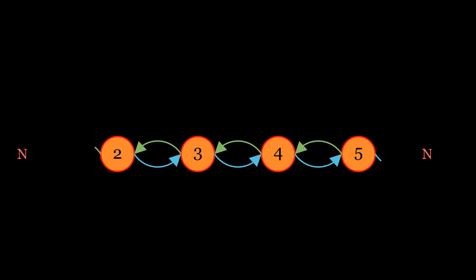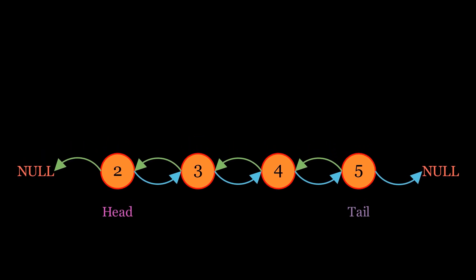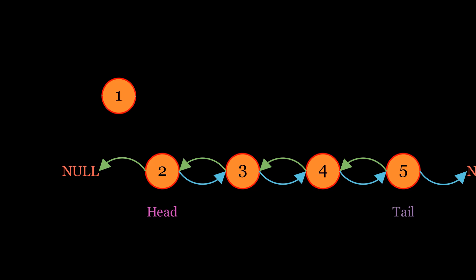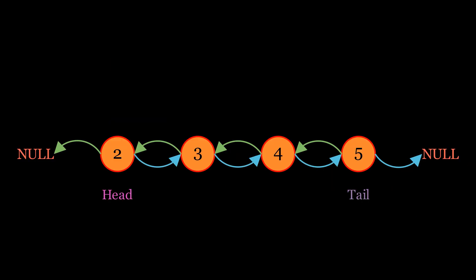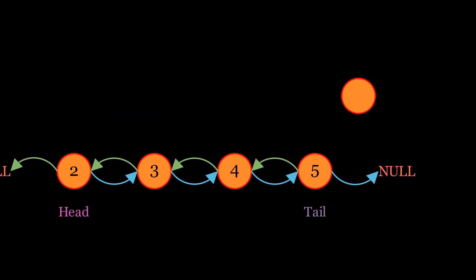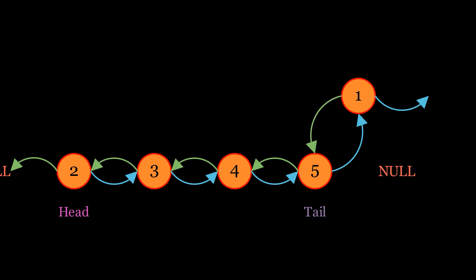I will not show the code for the operations, only visuals. To insert at the beginning of a doubly linked list, first create the new node, then set the next pointer of the new node to point to the current head node. Next, update the previous pointer of the current head node to point to the new node. Finally, change the head pointer to point to the new node. To insert at the end, first create the new node, set the next pointer of the current tail node to the new node, update the previous pointer of the new node to the tail, then update the tail pointer to the new node. Both these insertion operations are constant time.